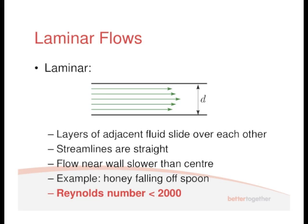The example of that would be, say, honey falling off a spoon. If you took a spoonful of honey and then let it pour, you get essentially what's known as laminar flow. Nice and orderly.